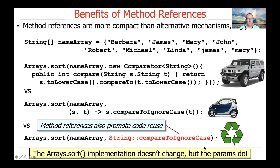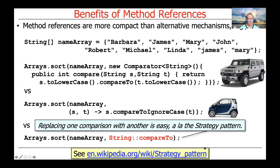Method references also help promote code reuse. If you've got a method like compareToIgnoreCase, we can trivially reuse it by just passing it in as a method reference to sort, which expects something to do the comparison. Arrays.sort never changes, but we can parameterize it with different methods to get different behaviors — for example, comparing ignoring case versus using compareToIgnoreCase versus compareTo, which includes case. For those who recall design patterns, this is basically the strategy pattern. We're able to strategize the behavior of the sort method through behavior parameterization in an incredibly concise way.